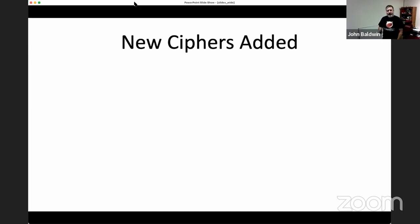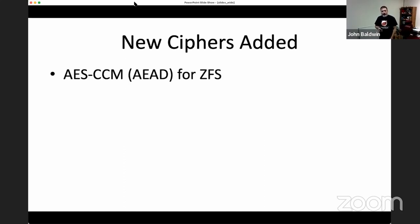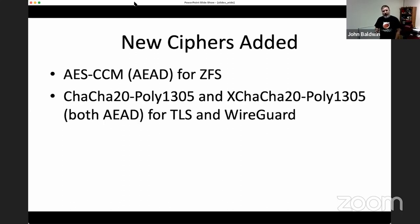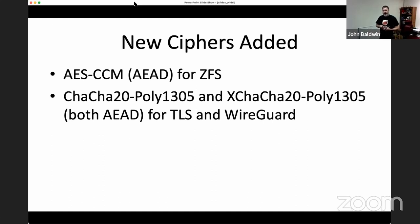We've also added new ciphers into the tree since the framework changes. Support for AES-CCM was added — another AEAD cipher similar to GCM but using a different auth mechanism, used by ZFS dataset encryption. We've also added support for ChaCha20-Poly1305 — a combination of the ChaCha20 stream cipher with the Poly1305 digest — as a defined AEAD combination used both for TLS and WireGuard. We also added XChaCha20-Poly1305, another variant used in WireGuard negotiation.